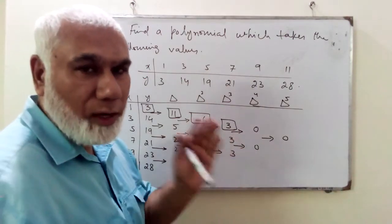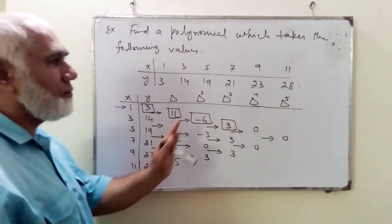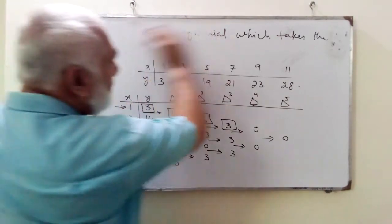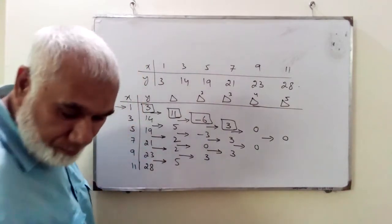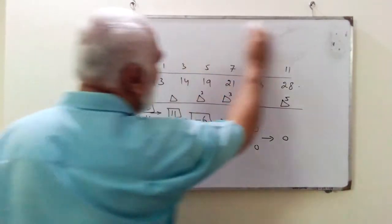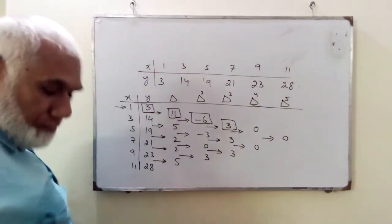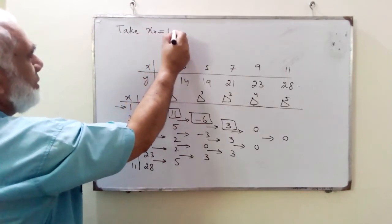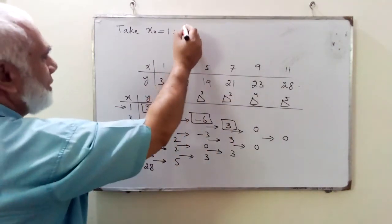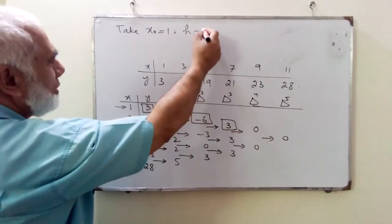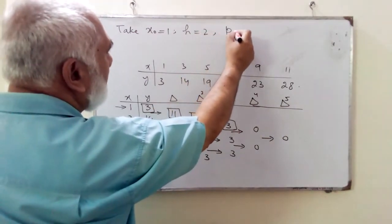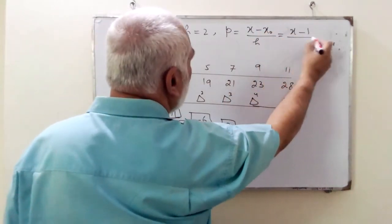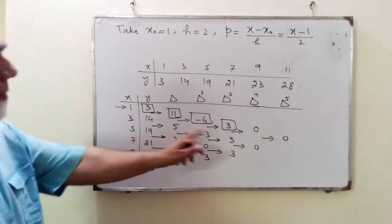Next we construct the value of p. You already know from studying interpolation that we have the formula to calculate p. Here x₀ equals one, x remains as x, and h is the difference between any two consecutive values, which equals two. So p = (x − x₀)/h, giving p = (x − 1)/2.